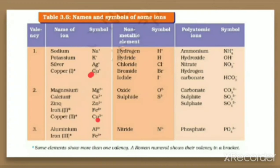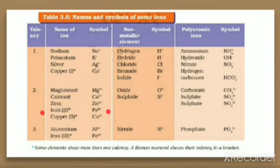Some elements show more than one valency — they can show more than one possibility, like one positive or more than one positive. Such valencies are represented in Roman numerals in the table. For example, copper(I) shows one positive charge and copper(II) shows two positive charges. Similarly, iron can have Fe²⁺ charge and also Fe³⁺ — it can form two valencies, two-plus and three-plus, represented in Roman numerals. These are the positively charged ions, that is cations.